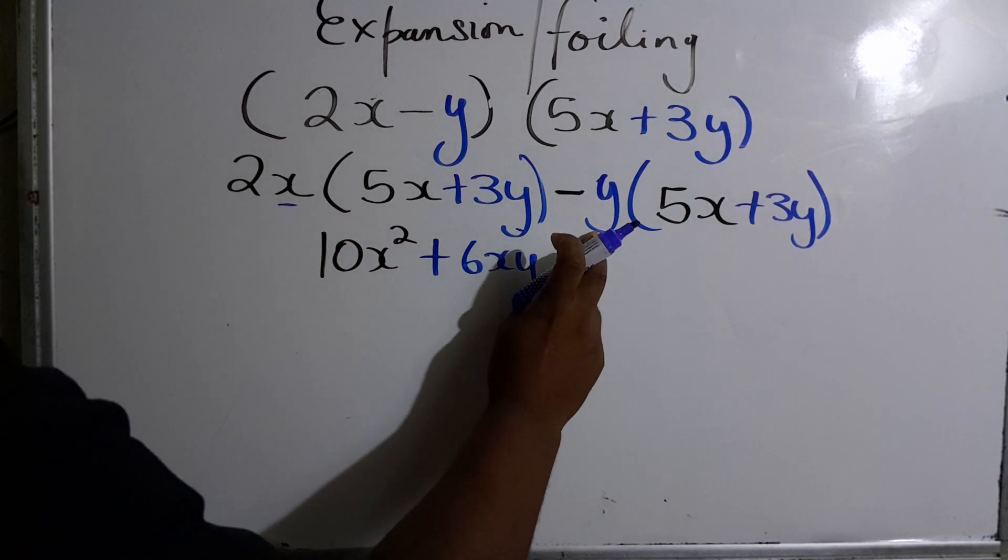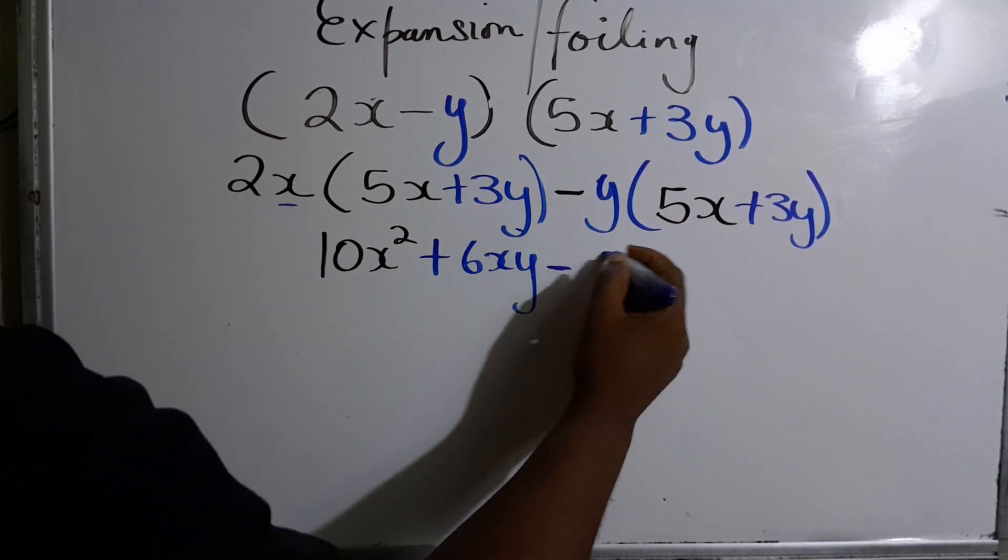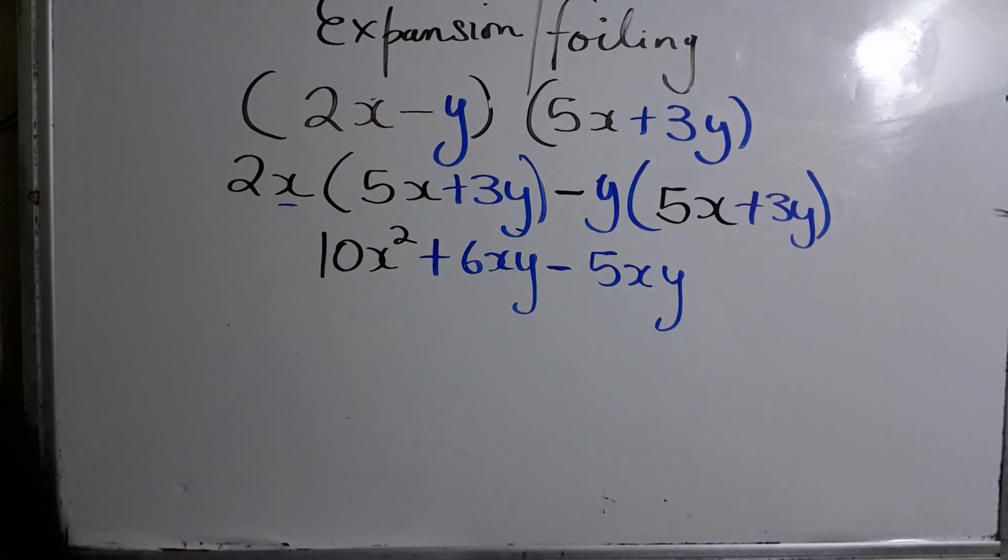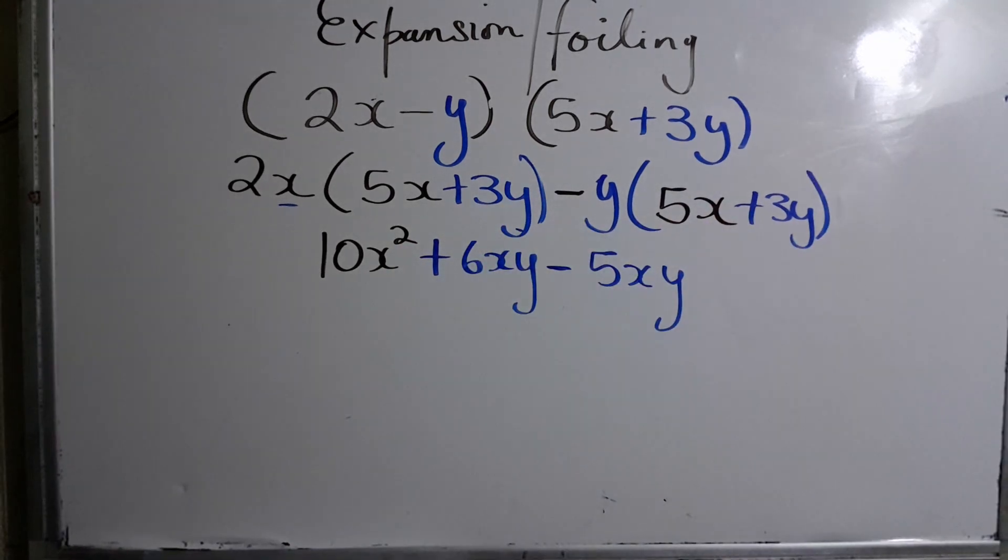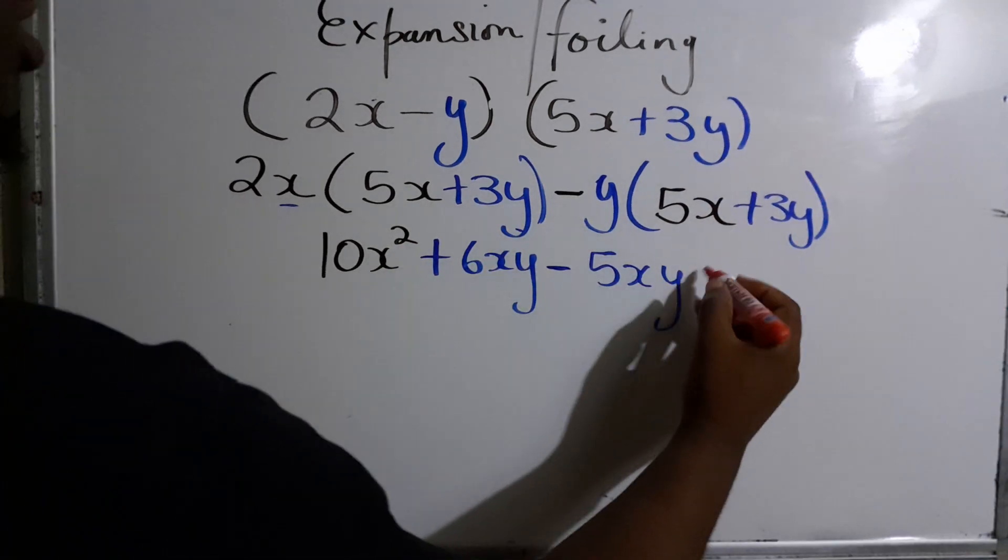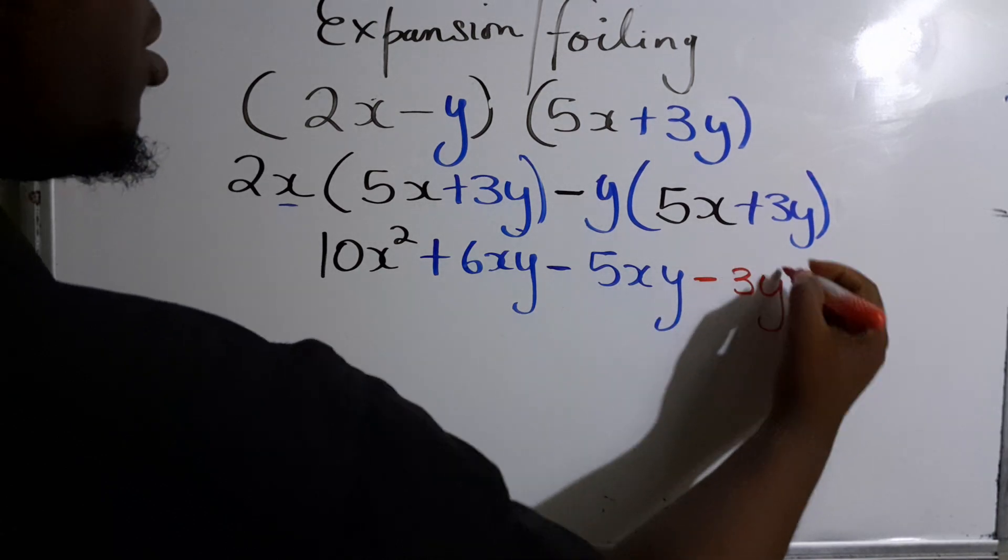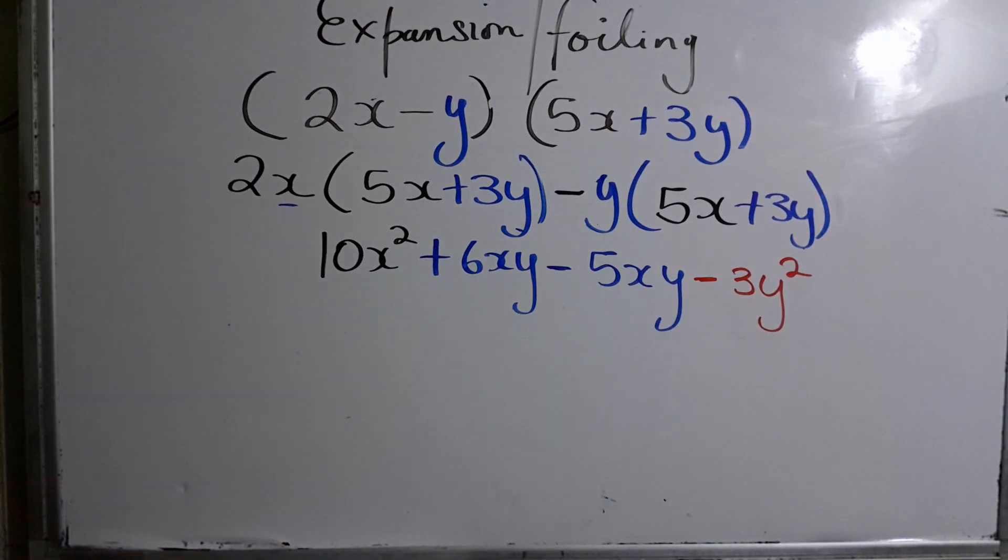On to the negative y now. So it's negative y times 5x which gives us negative 5xy. And the final one would be negative y times positive 3y, which would give us negative 3y squared. So negative y times 3y would give us the square.